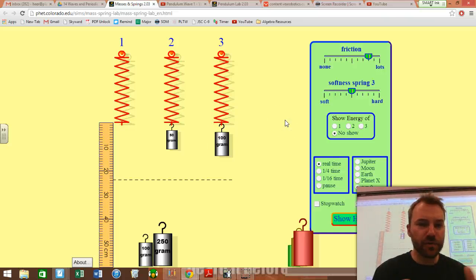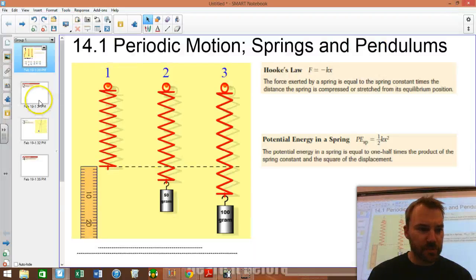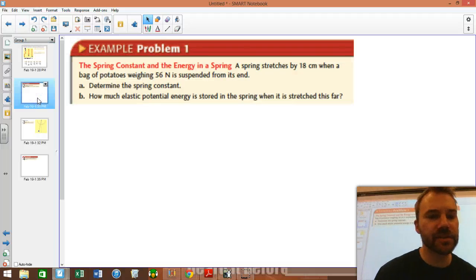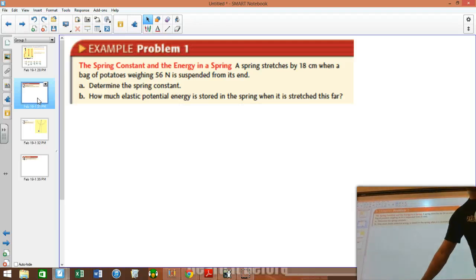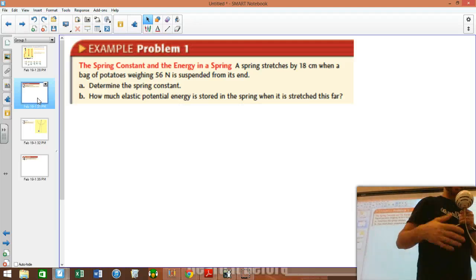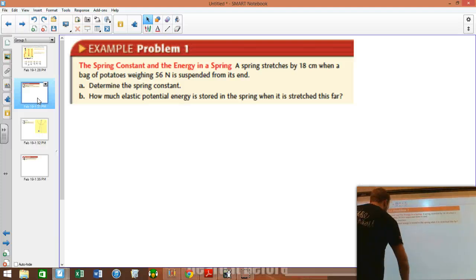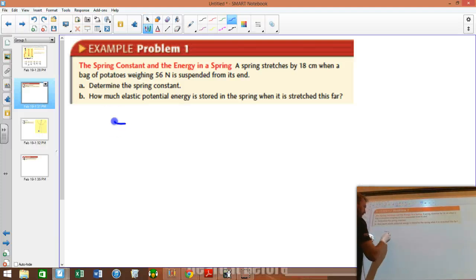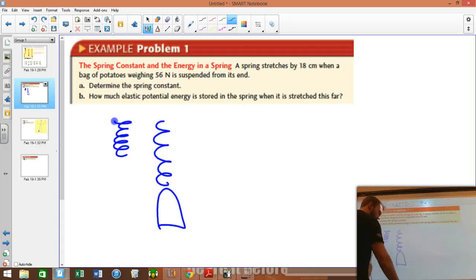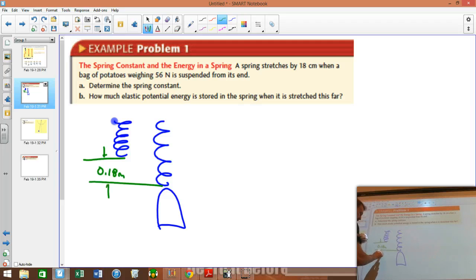So just kind of cool stuff. I'll put a link to this if you want to play around on your own. The last part about springs that I wanted to talk about today was this example problem. It says, the spring constant energy in a spring. A spring stretches by 18 centimeters when a bag of potatoes weighing 56 Newtons is suspended from it. So here's my spring normally. But then when I hang potatoes on it, it stretches 18 centimeters. 0.18 meters.